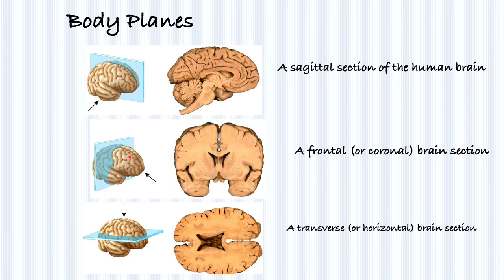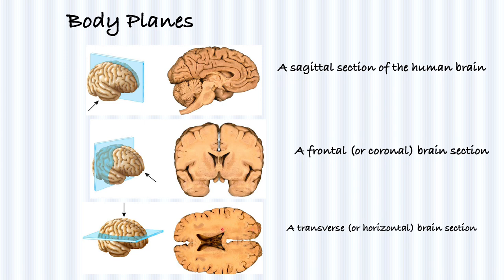When we take the frontal or coronal brain section, we're totally missing the brain stem and can't really see the cerebellum. However, we'll definitely be able to see the ventricles a little better and the longitudinal fissure. When we take the transverse plane, we can also see the ventricles better, but we are missing major structures such as the brain stem and the cerebellum.